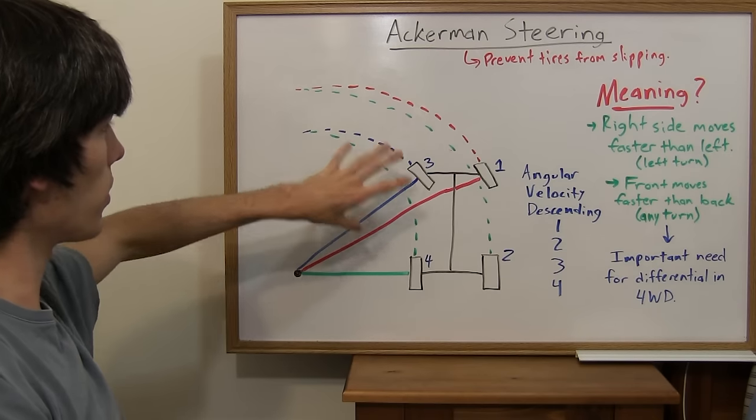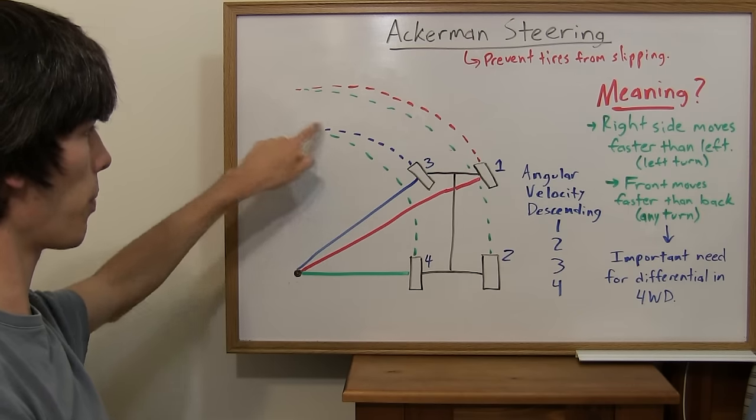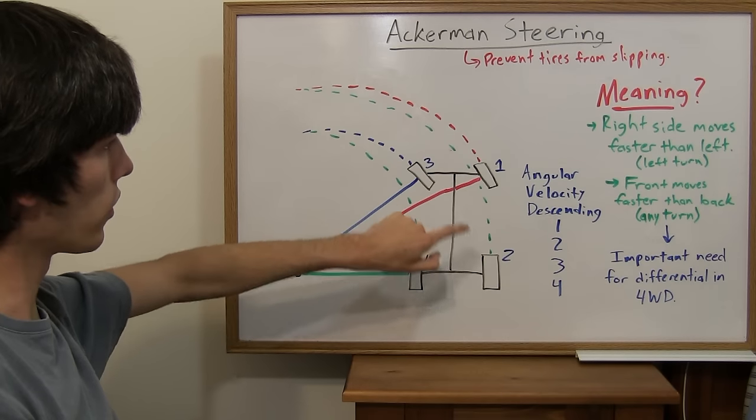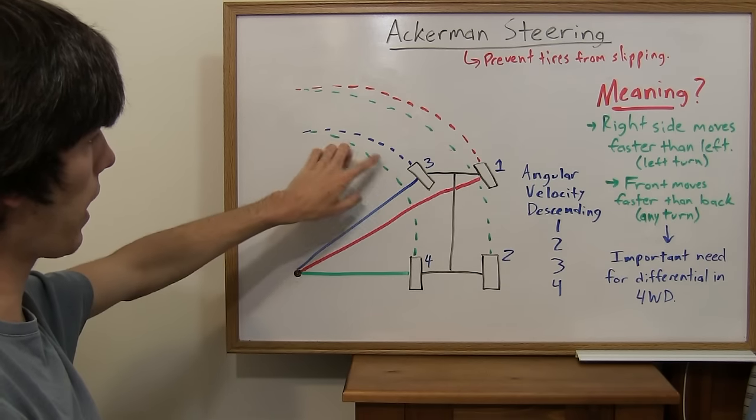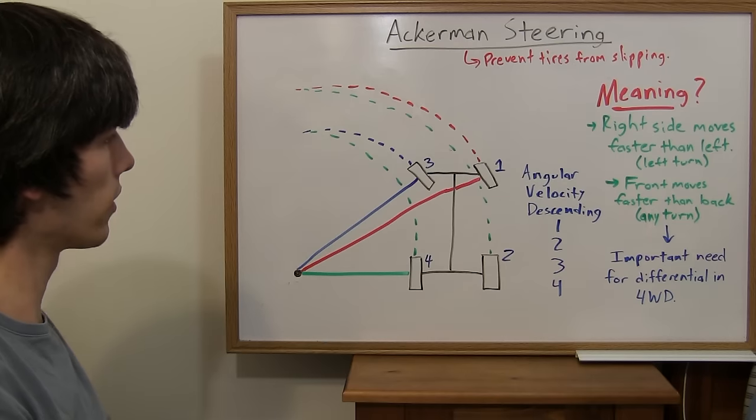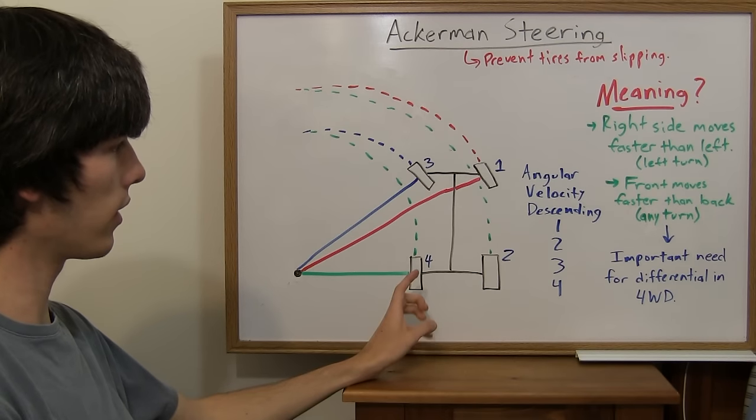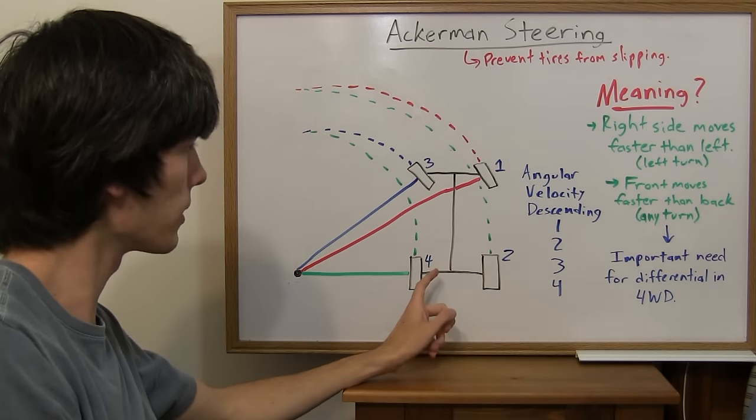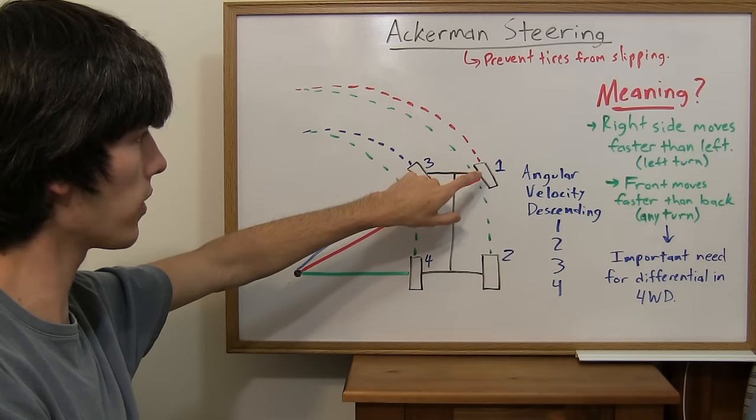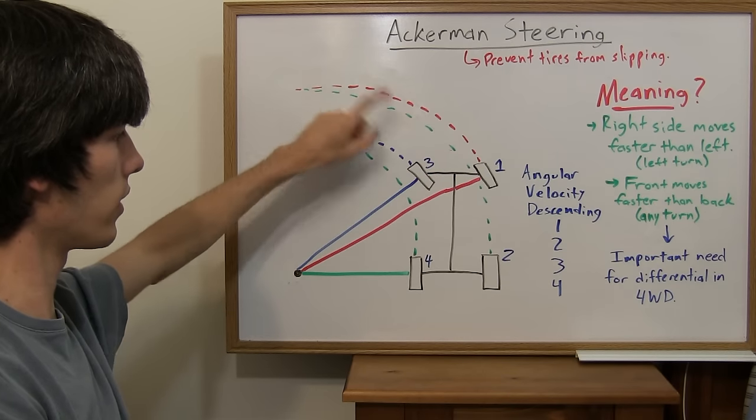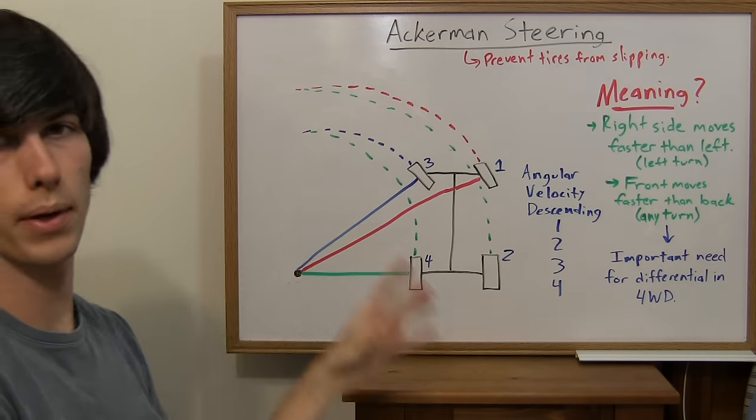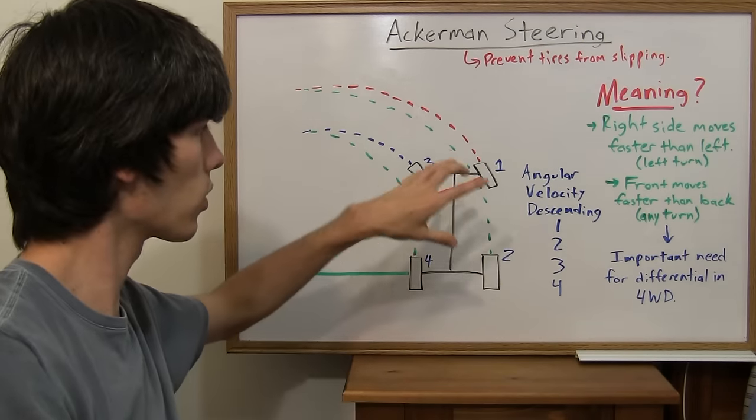One thing that you have to see when you look at this is each tire's path has a different radius. What that means is each tire is rotating at a different rate. The one on the outside travels a further distance than the one on the inside in the same amount of time, so it's rotating more quickly.